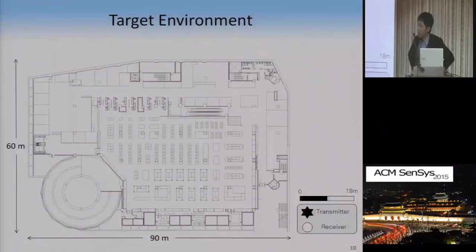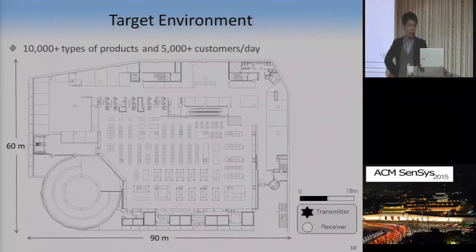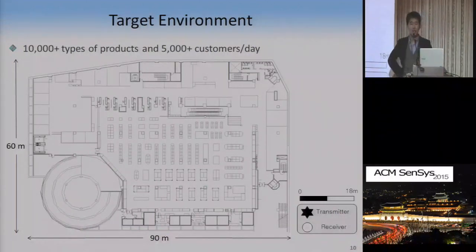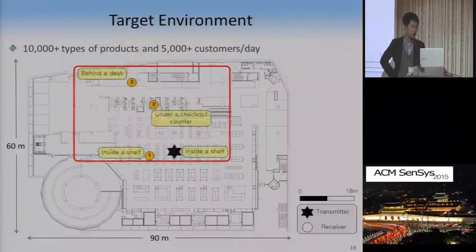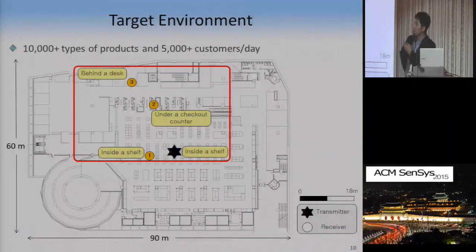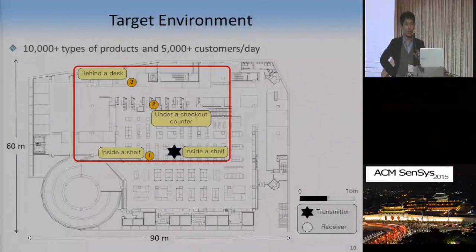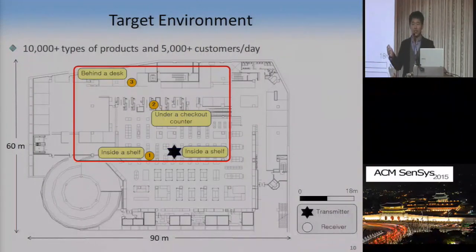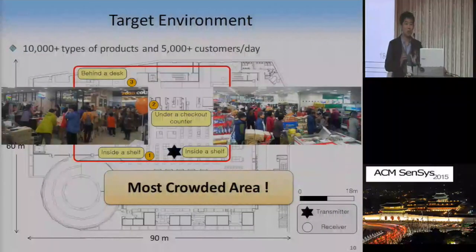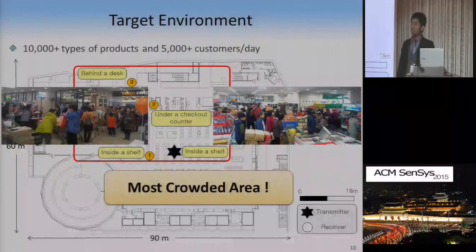In part of this area, we deployed one transmitter and three receiver nodes, making the distance between the transmitter and receiver increase with the receiver node ID. The reason we selected this partial area is simple: it is the most crowded area. Now let's see the results.